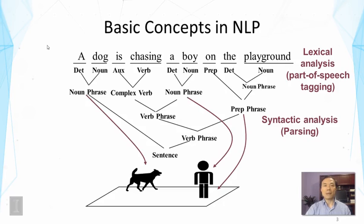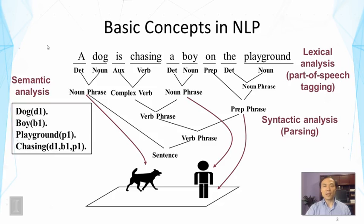But this is not semantics yet. In order to get the meaning, we have to map these phrases and structures into real-world entities that we have in our mind. 'Dog' is a concept we know, and 'boy' is a concept we know. For a computer, we formally represent these entities using symbols: dog D1 means D1 is a dog, boy B1 means B1 refers to a boy, etc. The chasing action is represented as a predicate with three arguments: D1, B1, and P1, which is a playground. This is a formal representation of the semantics of the sentence.